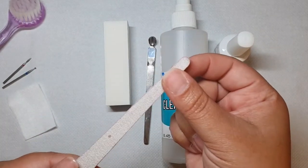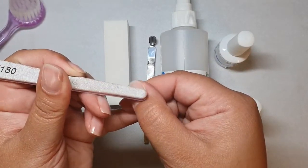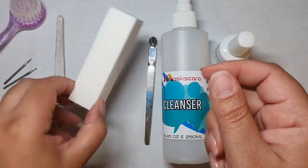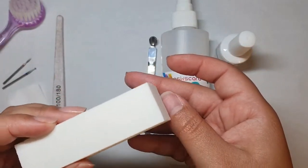We're going to be prepping with a file for this video, the general hand file, because not everybody has an e-file. We're doing it the ABC way, starting with a hand file, and then we'll be using a block buffer for the surface of the nail.